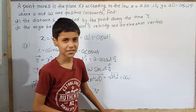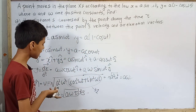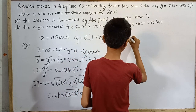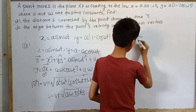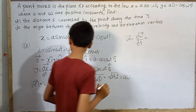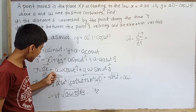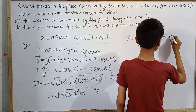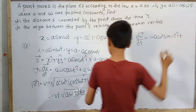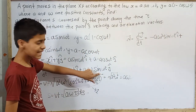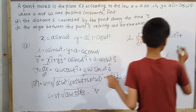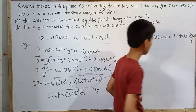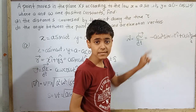Now for part (b), the angle between the velocity and acceleration vectors. We already have the velocity vector v = aω·cos(ωt)·î + aω·sin(ωt)·ĵ. Now let's find the acceleration vector w = dv/dt. Differentiating: cos(ωt) gives -ω·sin(ωt), and sin(ωt) gives ω·cos(ωt). So the acceleration vector is w = -aω²·sin(ωt)·î + aω²·cos(ωt)·ĵ.